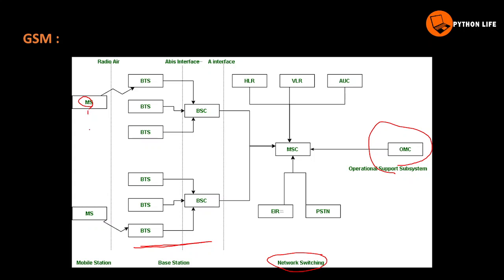From the mobile station, data travels to BTS, then BSC, then MSC. The MSC first checks HLR, VLR, and AUC for authentication. EIR provides an equipment identity database. Data is then routed to the PSTN (Public Switched Telephone Network).